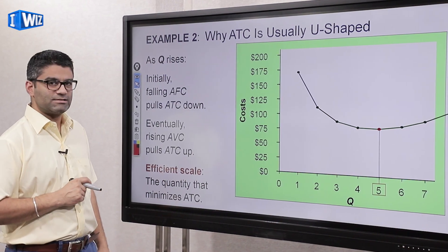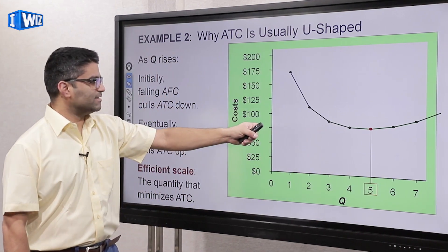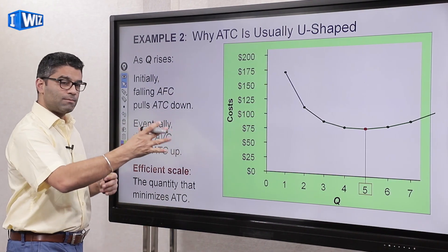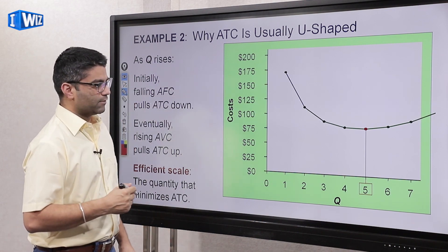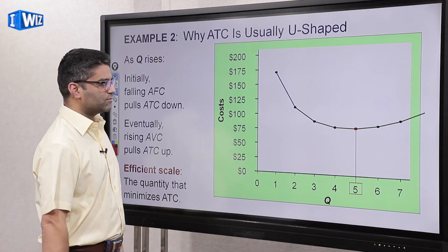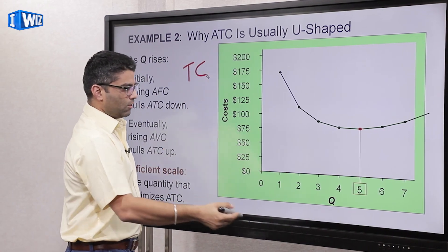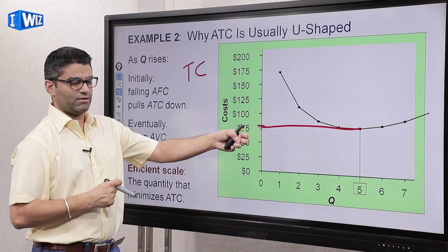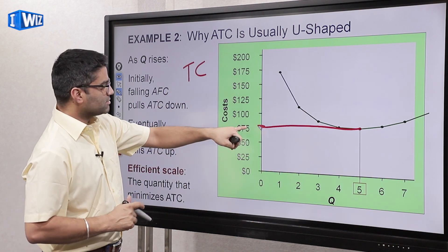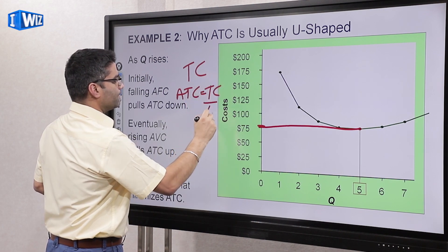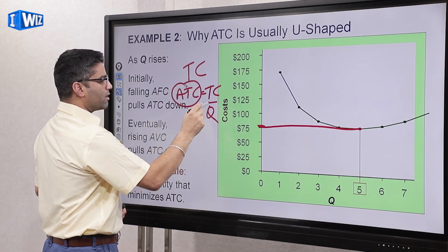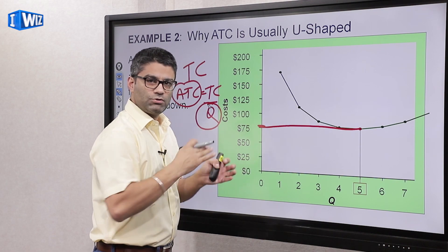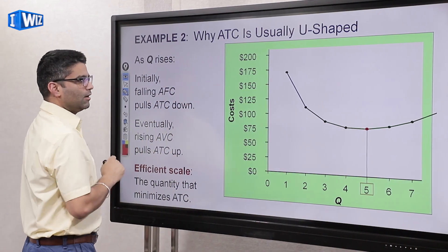The minimum point of ATC, at that quantity, is referred to as the efficient scale of production. It doesn't mean it's the best outcome for a producer — which we'll get into later — it's just the term given to that point. Also, if you want to get total cost from this graph: at a quantity of 5, if ATC is, say, 75, you know ATC equals total cost divided by quantity, so multiply 75 by 5 to get total cost. You can estimate total cost from these graphs as well.